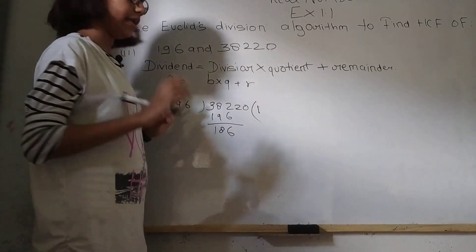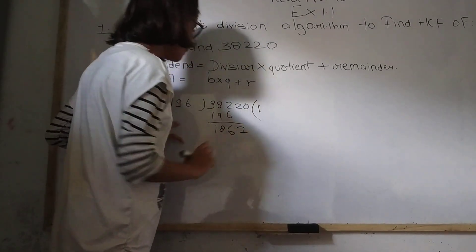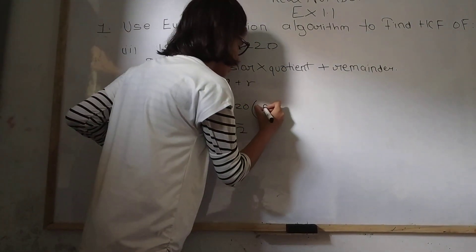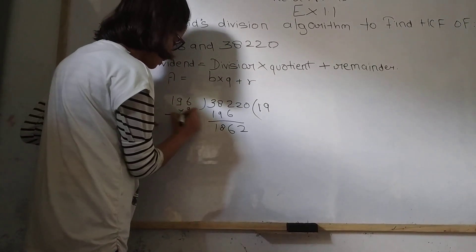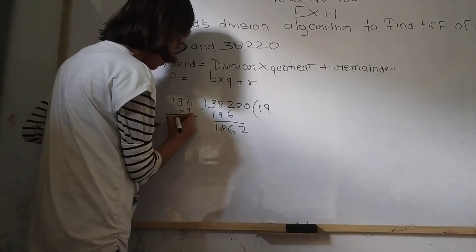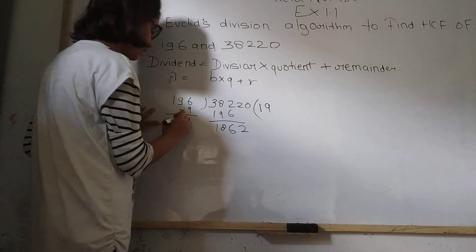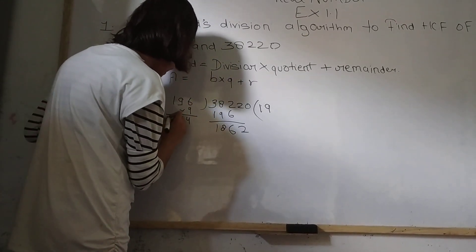Now it can be divisible. So 2 will come here. 9 times, let us multiply 9 times. So let us check 9 times 6, 6, 6, 9, 54, 54, 9, 9, 81, 86 and this 17.